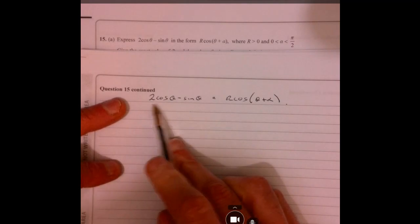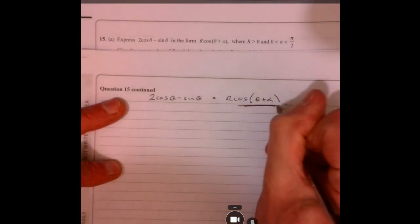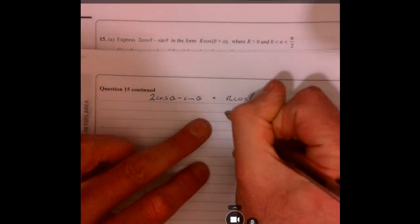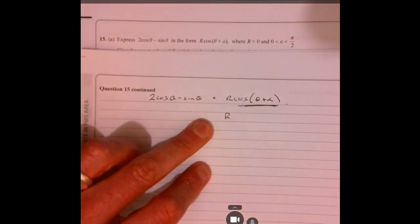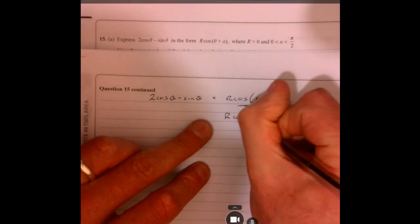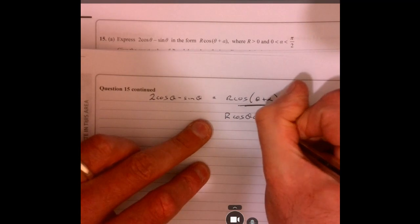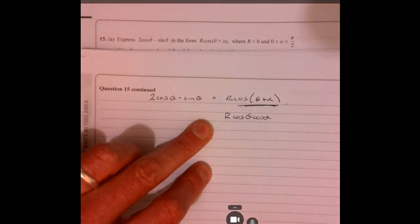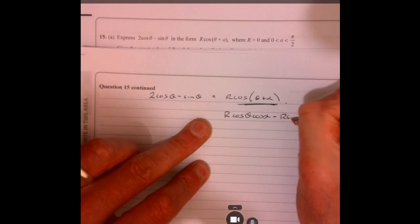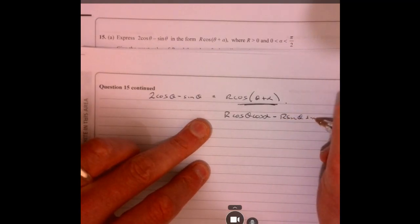Just using our addition formula. So let's start with this bit here. Know your addition formulae. So it's in the formulae book, so there's no excuse really. So R cos theta cos alpha and then minus sine theta sine alpha.